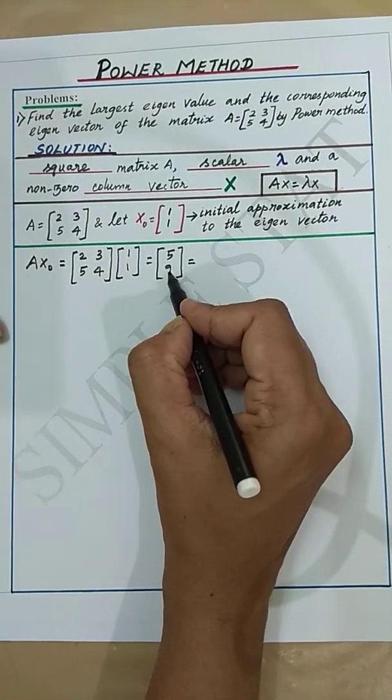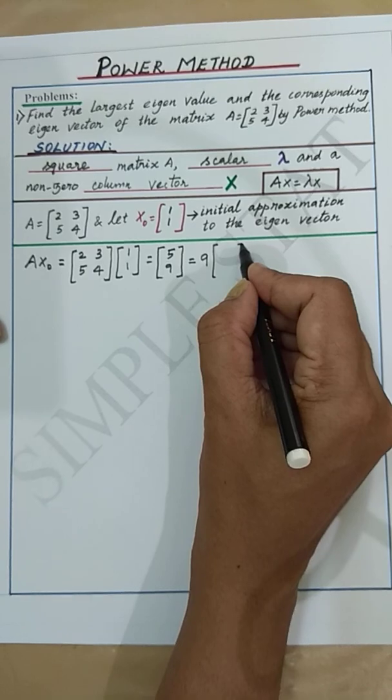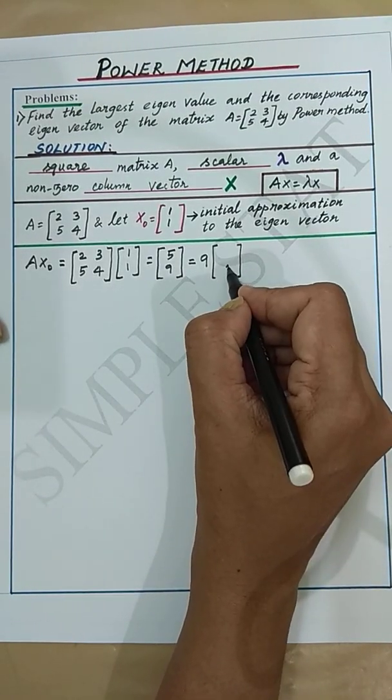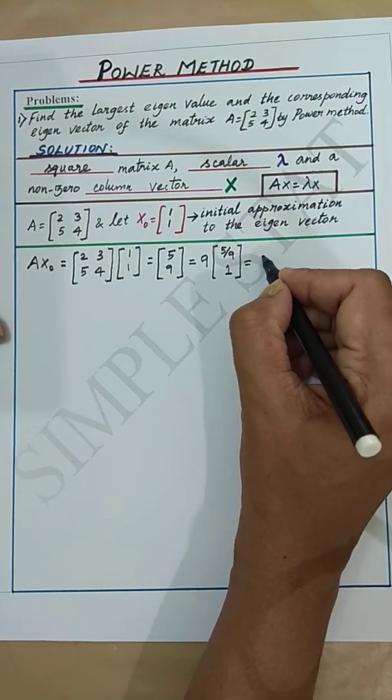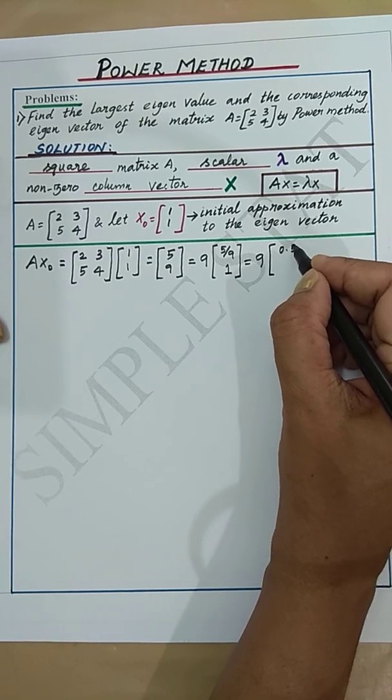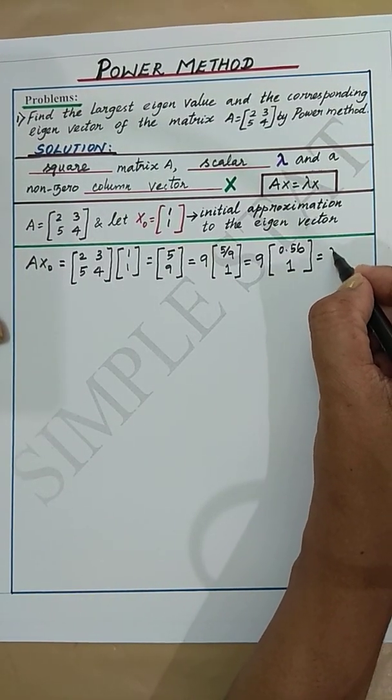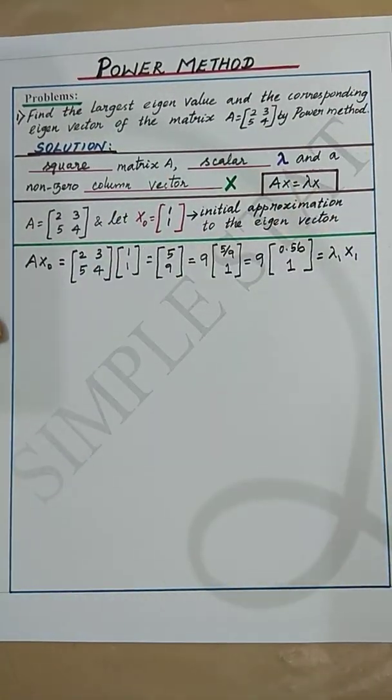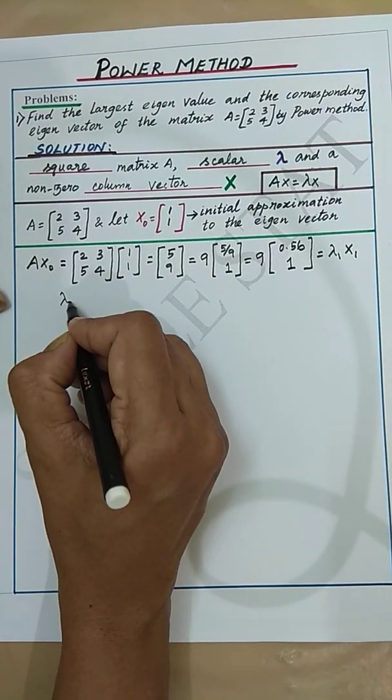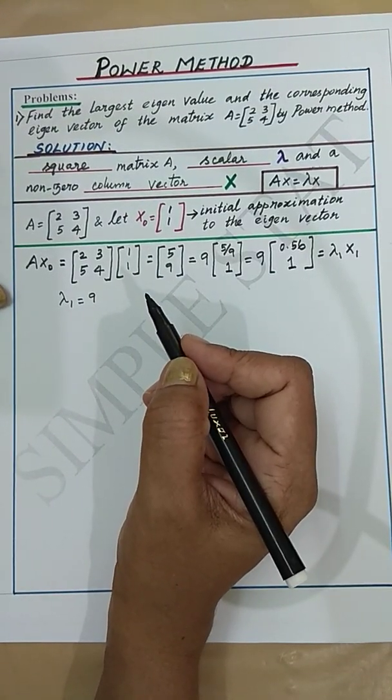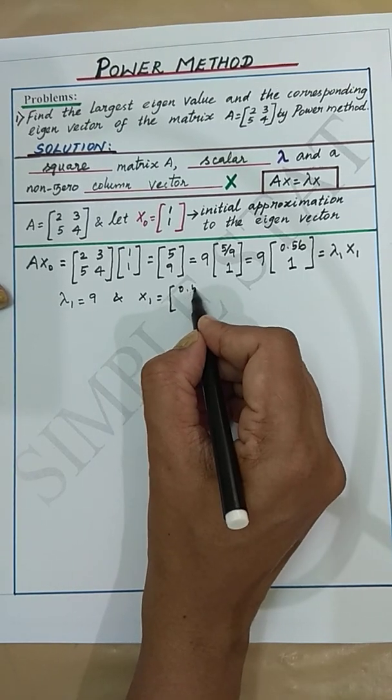Taking the largest value outside this matrix we get 9 into [5/9; 1], which is nothing but 9 into [0.56; 1], which can be written as lambda 1 into X1. That is, the first approximation to the eigenvalue is lambda 1 equal to 9 and the corresponding eigenvector is X1 equal to [0.56; 1].